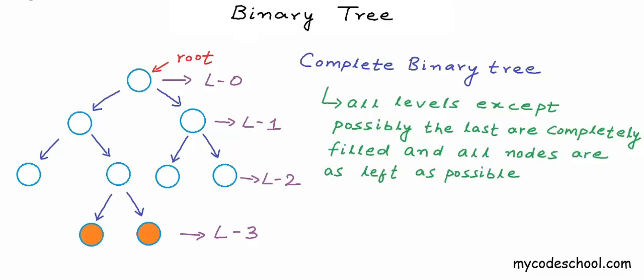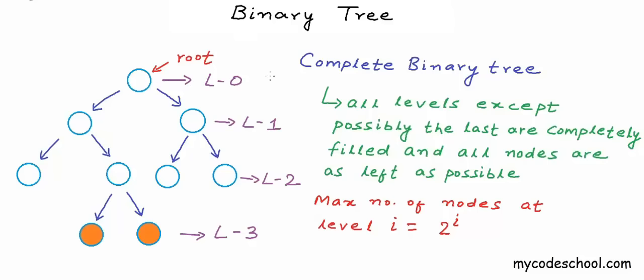The maximum depth of any node in this tree is 3, which is also equal to the height of the tree. If we number levels L0, L1, L2 and so on, the maximum number of nodes at level i is 2 to the power i. At level 0 we can have 1 node, at level 1 at most 2, at level 2 at most 4, and in general at level i at most 2^i nodes.